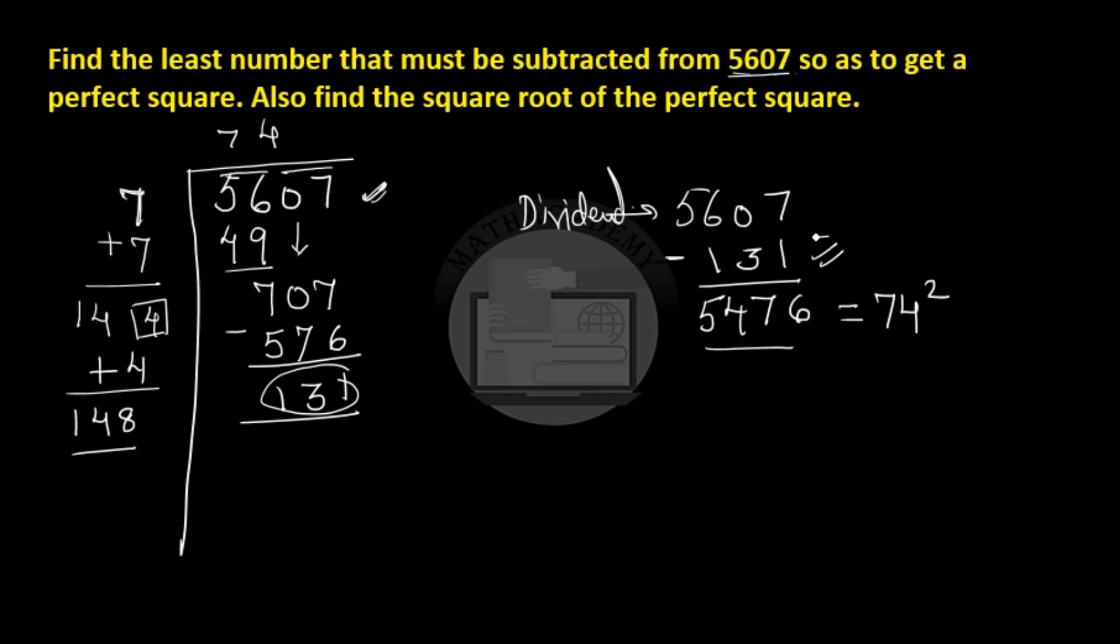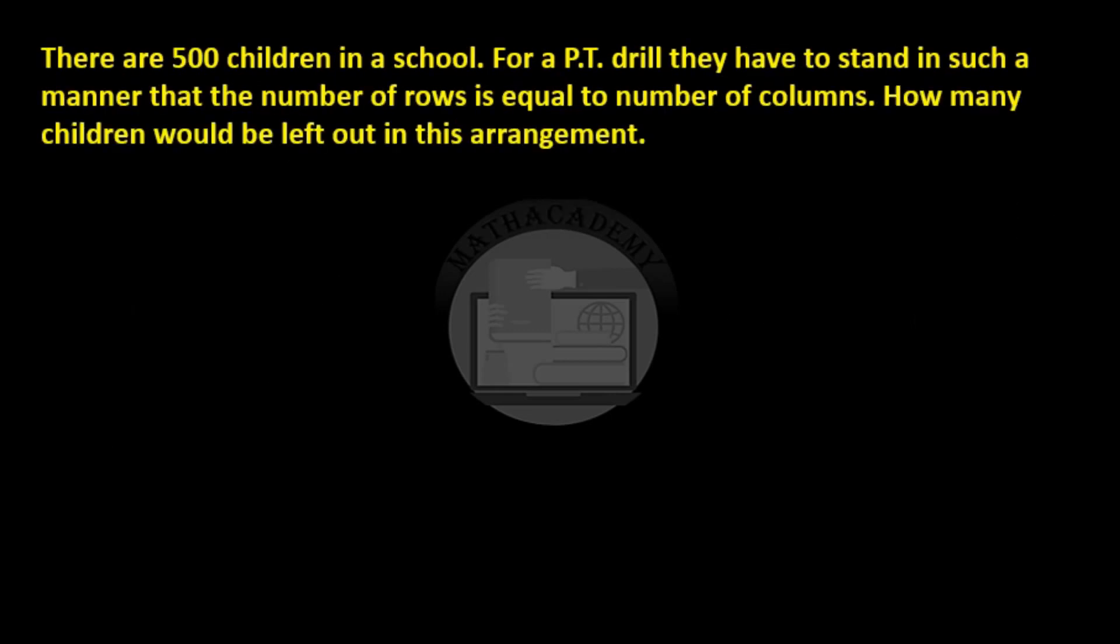The remainder is something extra, so if we subtract the remainder from 5607 we get 5476 which is the square of 74. Now I hope this question is clear. Let us see one word problem. There are 500 children in a school. For a PT drill they have to stand in such a manner that the number of rows is equal to number of columns. How many children would be left out in this arrangement?